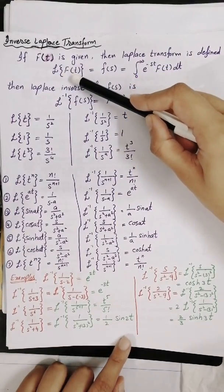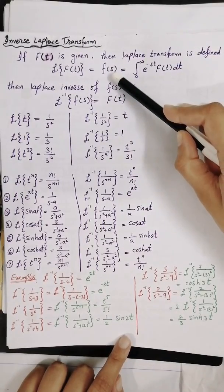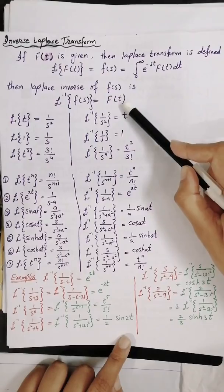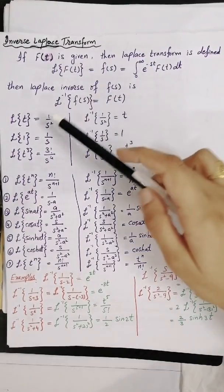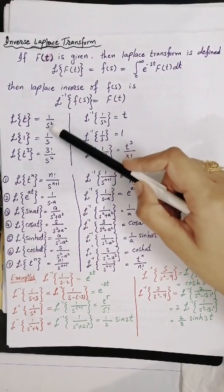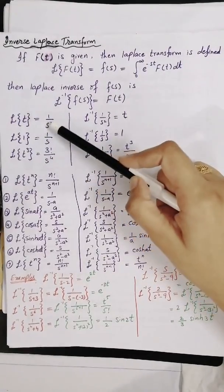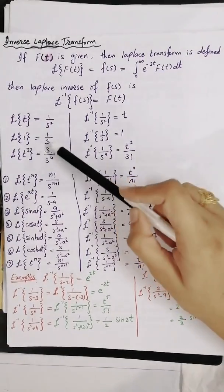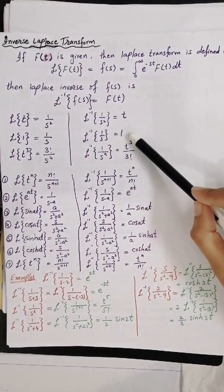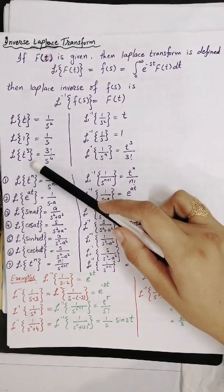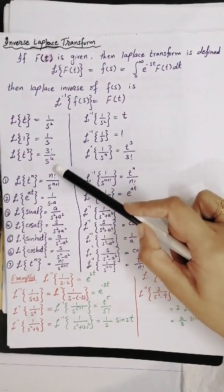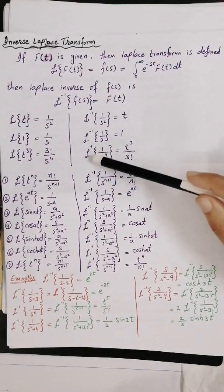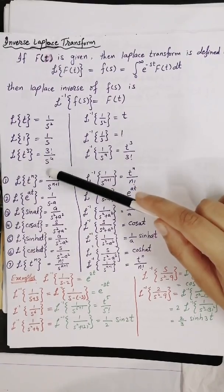If we have the inverse of F of s, we write it as: Laplace inverse of F of s is equal to f of t. Just like we have seen that Laplace of t equals 1 over s squared, so if we want to find the Laplace inverse of 1 over s squared, that is equal to t.